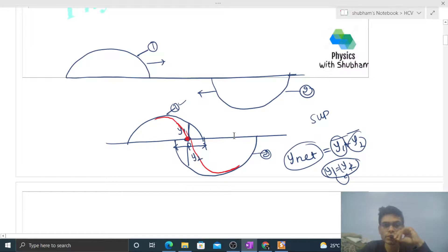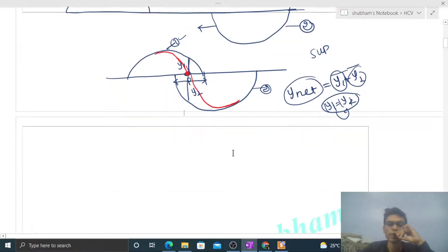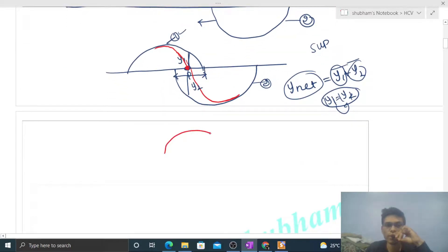So us time pe jo wave ka shape aayega na, that will look something like this. Is tarah se dekho, yeh point move nahi karega. So wave ka shape kuch is tarah se ho jayega. So we can say ki jo particles ka displacement hai wo affected hoga when the two waves will overlap. Other than this, there is no relation between the two waves as such.